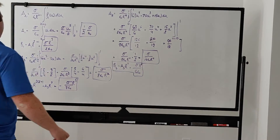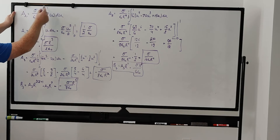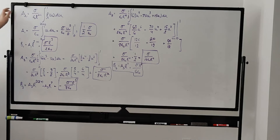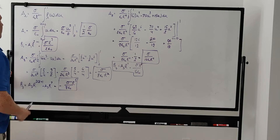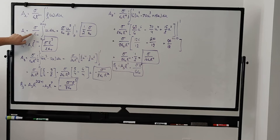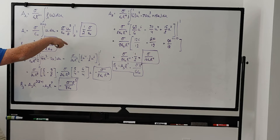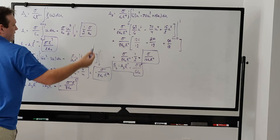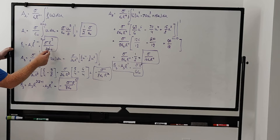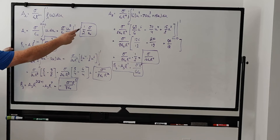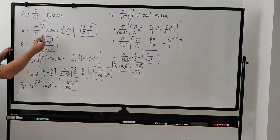I just rewrote the integral expression we'll use to find all the coefficients: sigma over epsilon naught times radius to the l minus 1 power, times the integral from 0 to 1 of the Legendre polynomial with respect to u. Plugging in l equals 1, we get sigma naught over epsilon naught times the integral of u du, which gives u squared over 2. Evaluating the bounds gives one half, so a1 equals sigma over 2 epsilon naught. Then b1 equals a1 times R to the 2 times 1 plus 1, which is sigma R cubed over 2 epsilon naught.